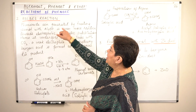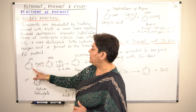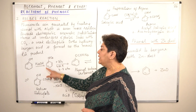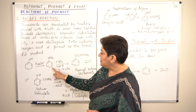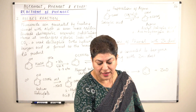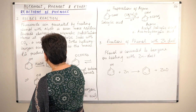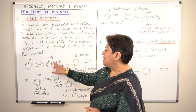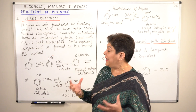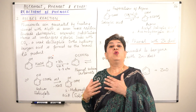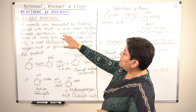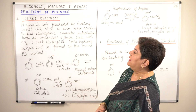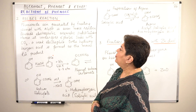The phenoxide ion is generated by treating phenol with sodium hydroxide, resulting in the formation of sodium phenoxide — a benzene ring with O negative and Na positive. This phenoxide ion is highly reactive; it makes the benzene ring even more reactive towards Electrophilic Aromatic Substitution.